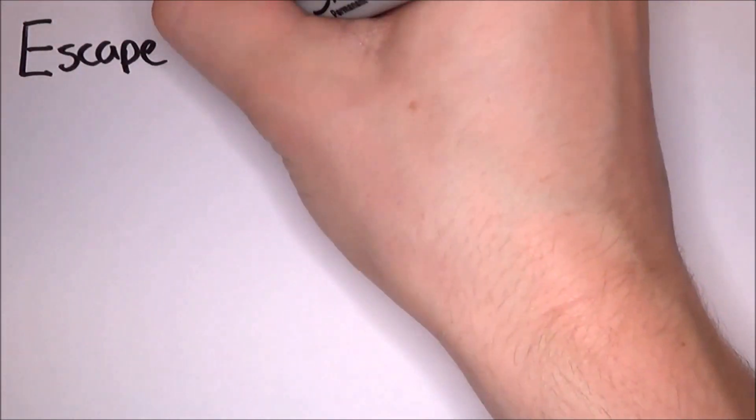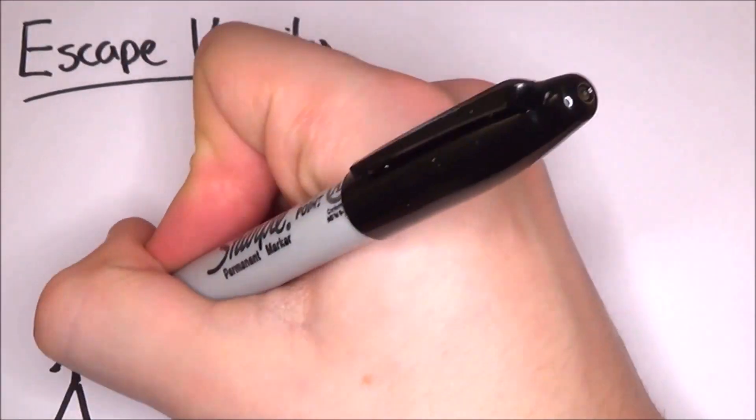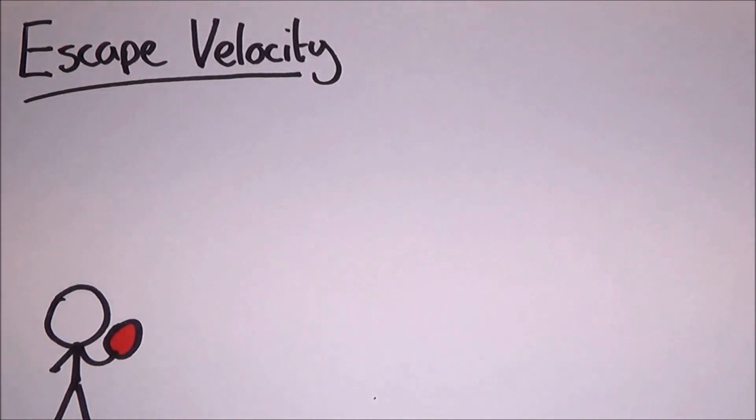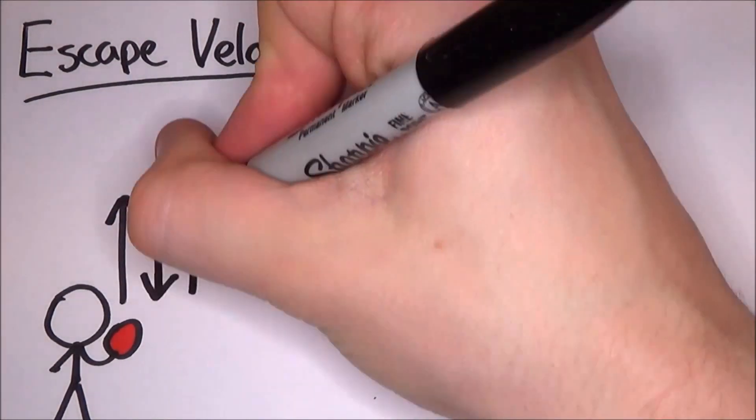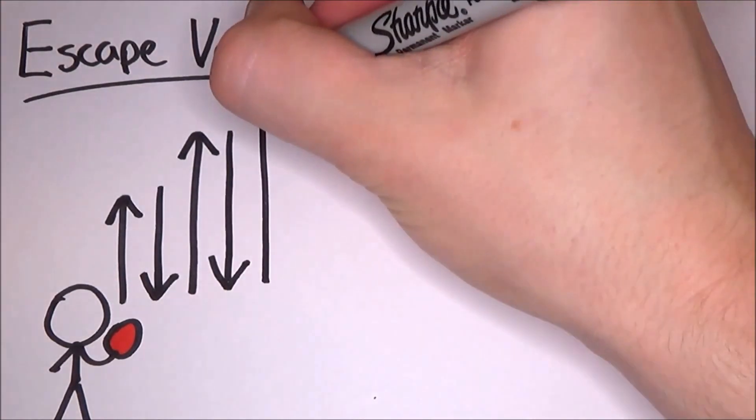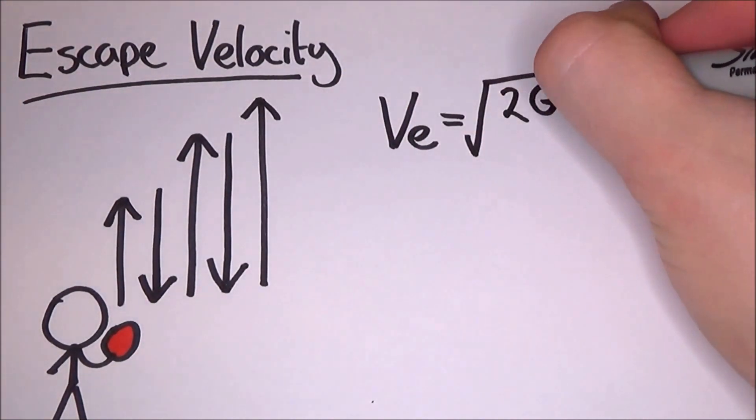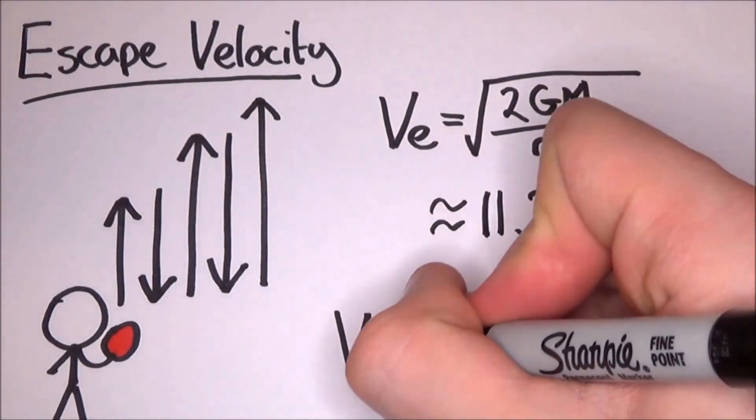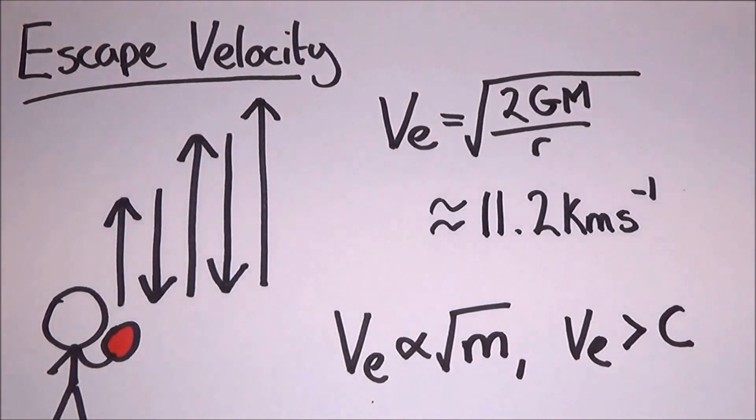There is also something you should be aware of. Escape velocity. If I was to throw a ball in the air, it would come back down. So if I was to throw it again, but harder, it would still come back down, but it would take longer. So if we can throw a ball with enough force so that the velocity is high enough so that it won't come back down, we have reached escape velocity and we can actually work it out. Escape velocity is equal to the square root of 2GM divided by R. It comes out at approximately 11.2km per second. So if I could throw a ball at 11.2km per second, it wouldn't come back.